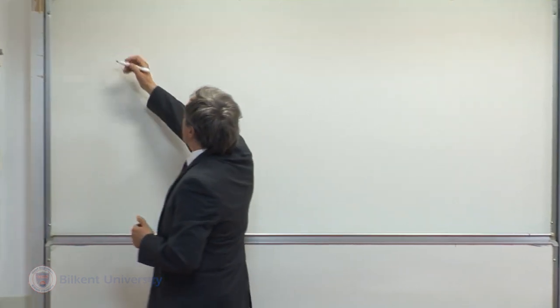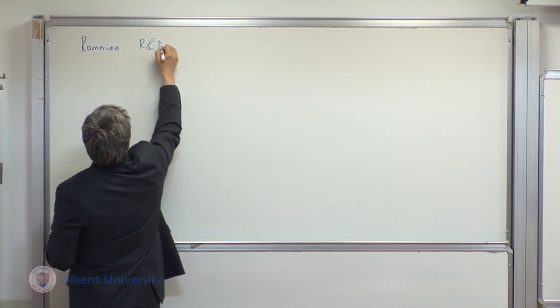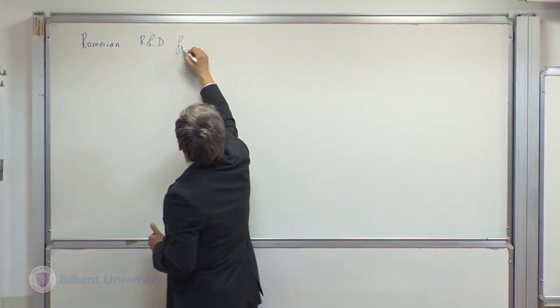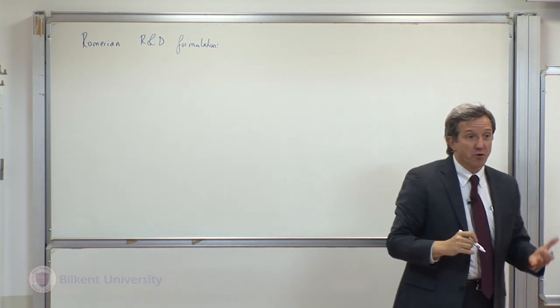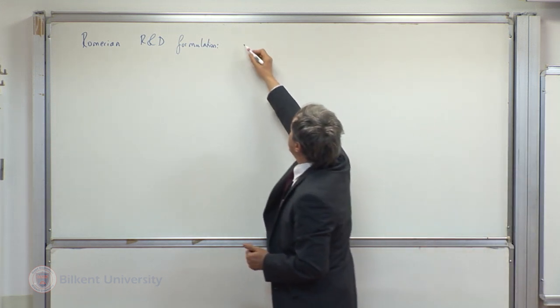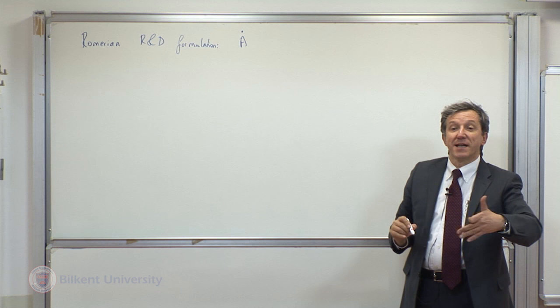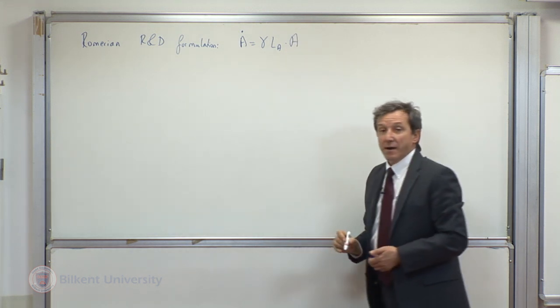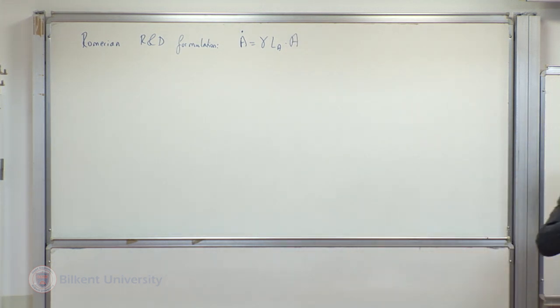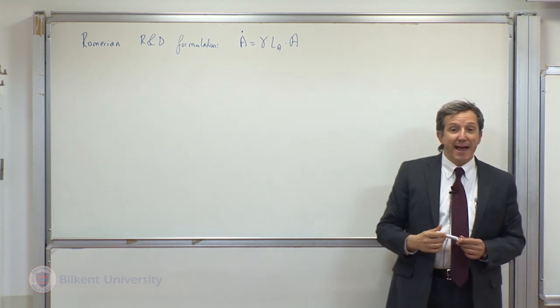As you will recall, the Romerian R&D formulation, which is the main source of growth of this economy, is based on the idea that new research, new blueprints, new ideas, new set of knowledge is the end result of three factors: productivity taken as exogenous, number of researchers working for research, and the level of existing stock of knowledge.